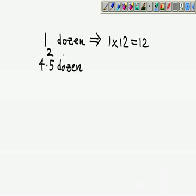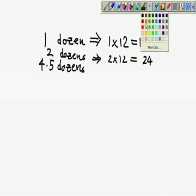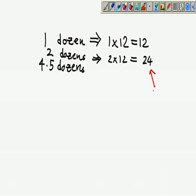But before that let's do two dozen. Two dozen, we'll have 2 times 12 equals 24. So we label it...